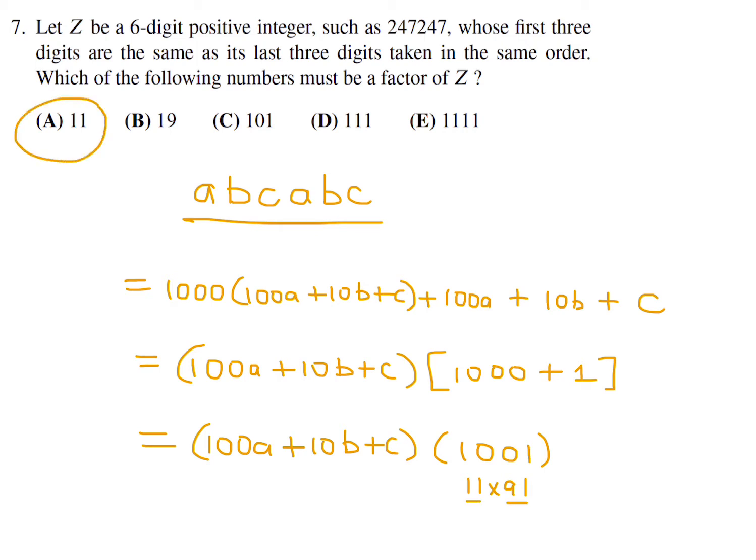And 1,001 is 11 times 91. So all numbers of this form are factored by 11 and 91. And of those, 11 is present in the answer choices. So number 7, the answer is A.